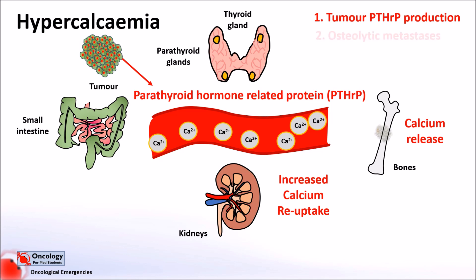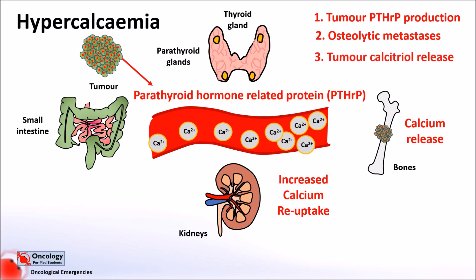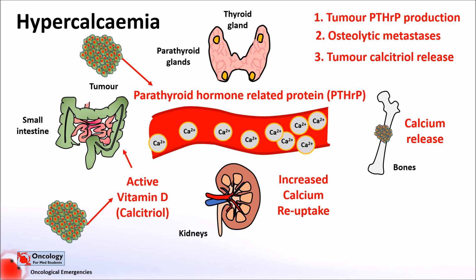The next most important mechanism is the development of osteolytic metastases — metastases that are able to break down bone. This effect results from proteins that tumours release which increase the activity of osteoclasts, the cells in bone which break down bone tissue. Typically, you'll get low parathyroid hormones, low or normal calcitriol levels, and a low or normal parathyroid hormone-related protein level. The final mechanism is the production of calcitriol, the active form of vitamin D, which leads to increased gut absorption and therefore higher calcium levels in the blood. This is commonly seen in lymphomas, especially Hodgkin's lymphoma.